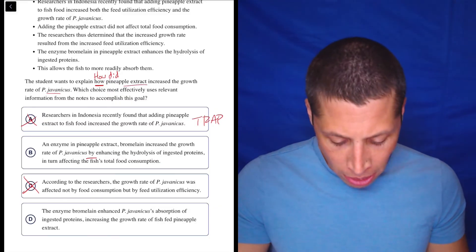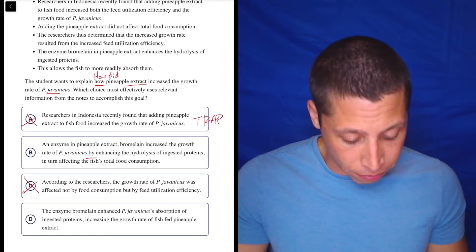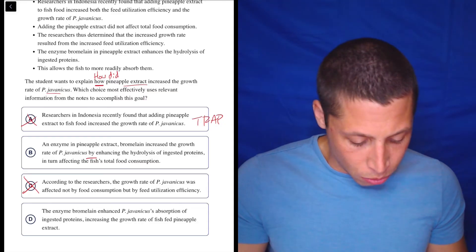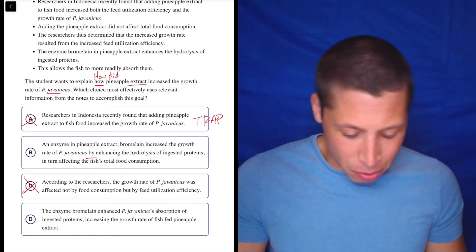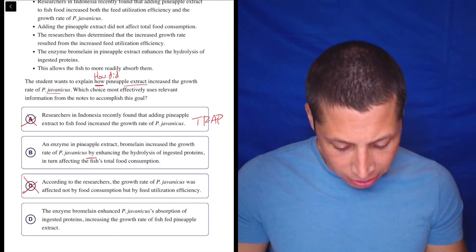D. The enzyme bromelain enhanced P. jovenicus's absorption of ingested proteins, increasing the growth rate of fish fed pineapple extract. Okay, so that seems to be doing the same thing. It's talking about the pineapple extract and increasing the growth rate. How did it increase it? It enhanced its absorption of proteins.